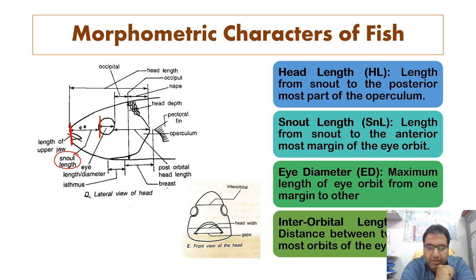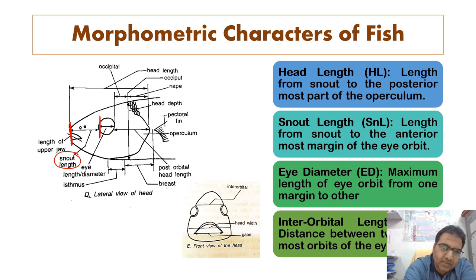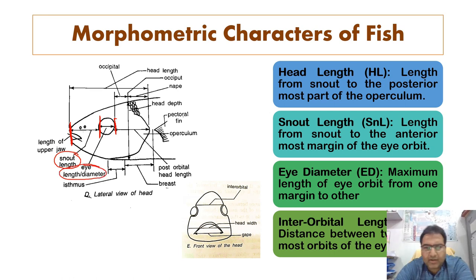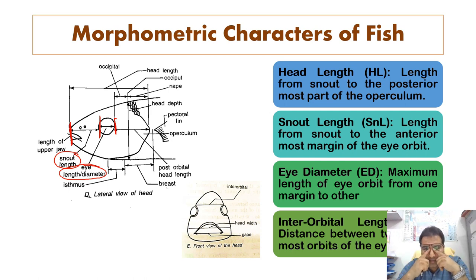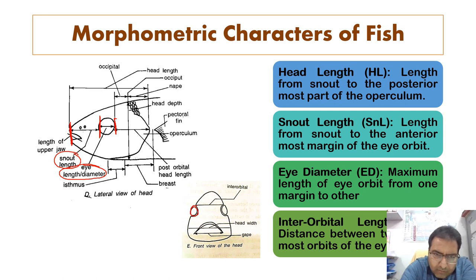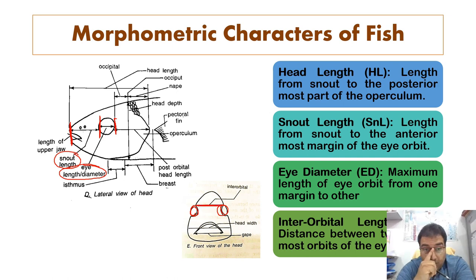Eye diameter is the maximum length of the eye orbit — from one margin to the other margin of the orbit. It is also called eye length or eye diameter. Interorbital length is the distance between the orbits of the two eyes — from the orbit of one eye to the orbit of the second eye. This distance is called the interorbital length.